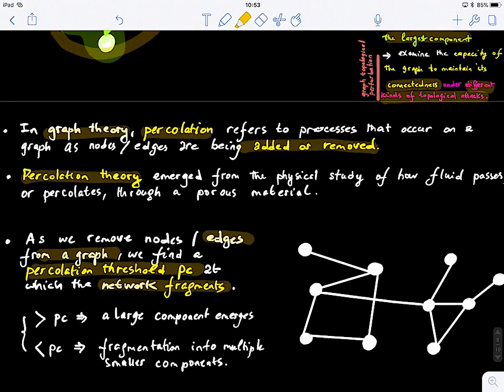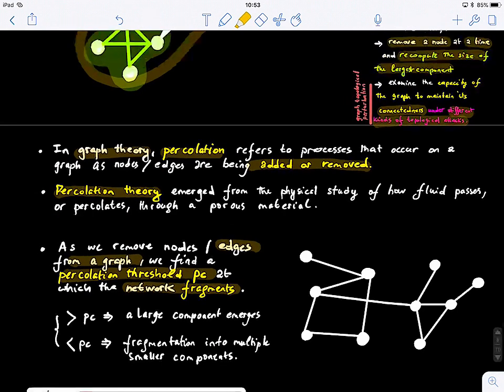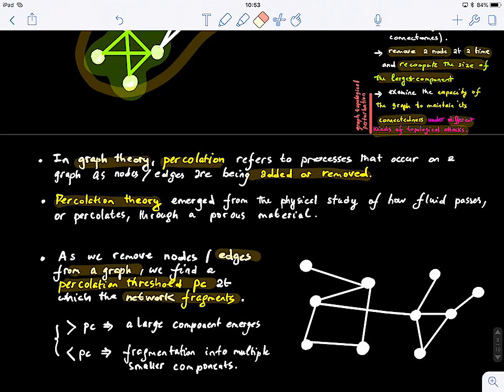So we want to know, we want to automatically find a threshold where when we're removing those edges, somehow the network will completely become fragmented. So above this threshold, we still have a large connected component. But below this threshold, basically, the network is fragmented into much smaller components. So this is what we call the percolation threshold.